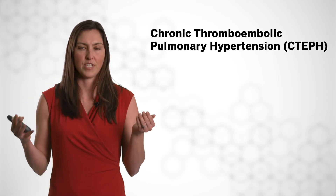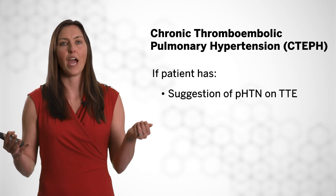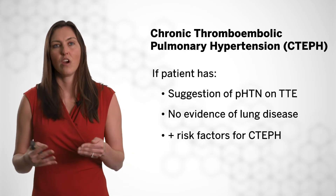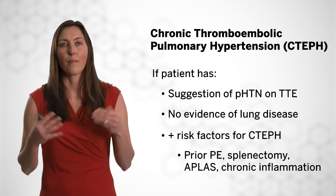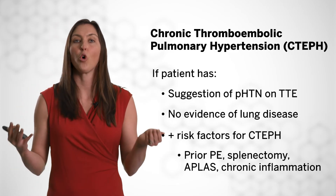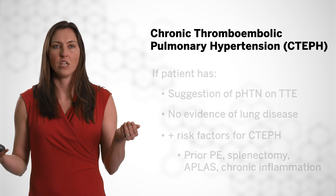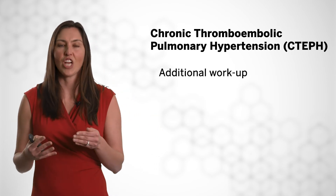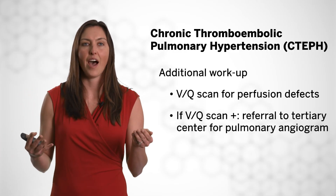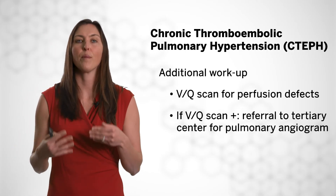When diagnosing pulmonary hypertension, one group in particular requires further diagnostics: Group 4, called chronic thromboembolic pulmonary hypertension. If a patient has suggestion of pulmonary hypertension on TTE without evidence of lung disease and has risk factors for chronic thromboembolic pulmonary hypertension — such as prior pulmonary embolism, history of splenectomy, antiphospholipid syndrome, a hypercoagulable state, or chronic inflammation — additional workup is needed, such as a ventilation-perfusion scan for evidence of perfusion defects. If the perfusion scan is positive, these patients would need referral to a tertiary center for a pulmonary angiogram.